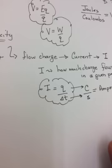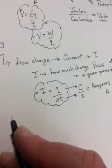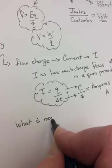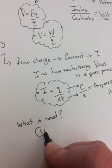Okay? So current, then, is simply charge that's flowing. What do you need to make charge flow? Three things.